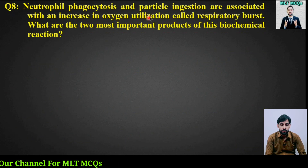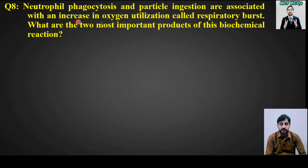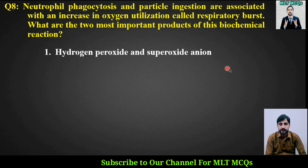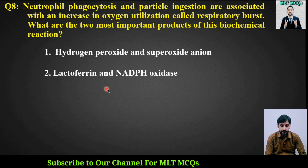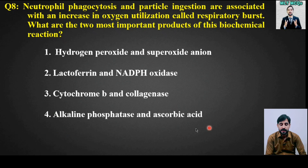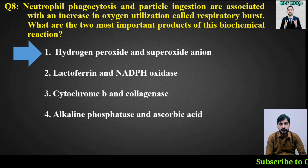MCQ number 8: Neutrophil phagocytosis and particle ingestion are associated with an increase in oxygen utilization called respiratory burst. What are the two most important products of this biochemical reaction? Options are: hydrogen peroxide and superoxide anion, lactoferrin and NADPH oxidase, cytochrome B and collagenase, or alkaline phosphatase and ascorbic acid. The right answer is option number 1, hydrogen peroxide and superoxide anion.